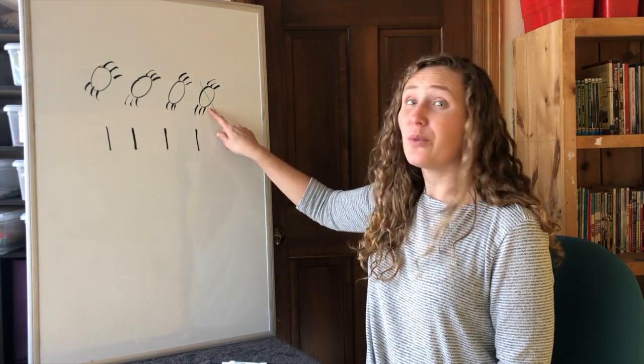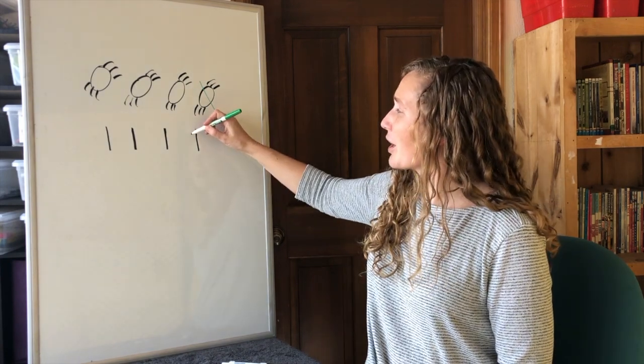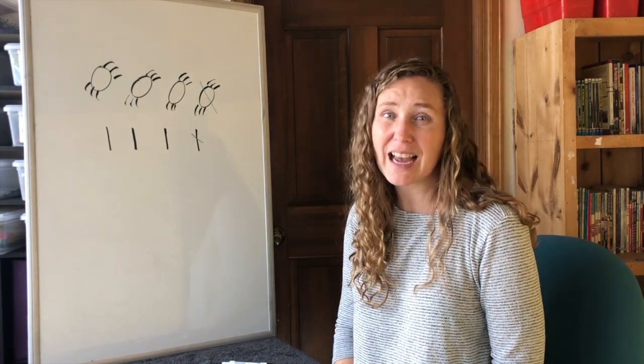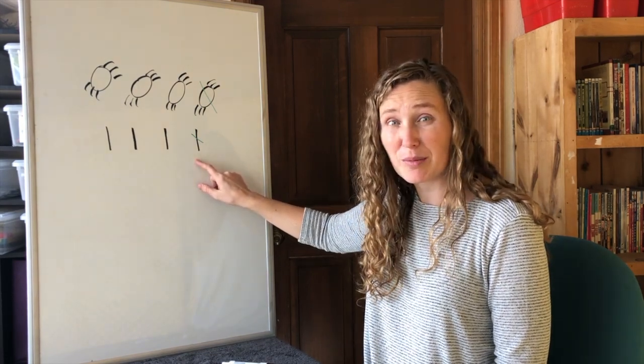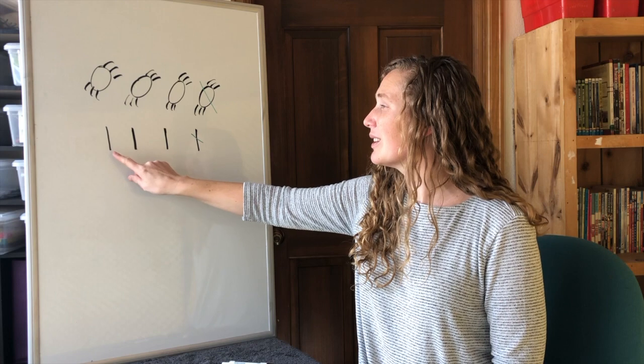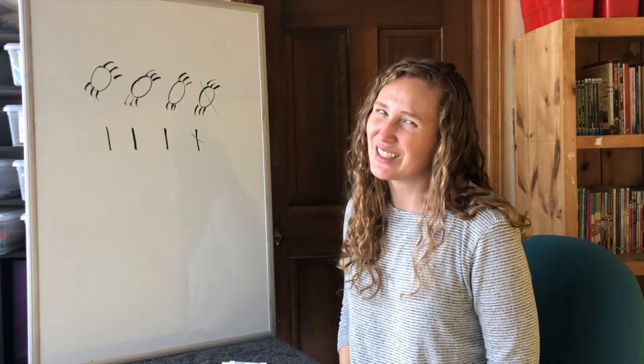Then when one spider falls out, we just mark one of our tally marks away. That still makes the same subtraction problem. We're still left with one, two, three. It's just a little easier to draw.